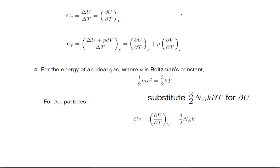For Avogadro's number of particles nA, we substitute 3 halves nA k delta T for delta U, and the delta Ts cancel. Then we're left with heat capacity at constant volume is 3 halves nA times k.